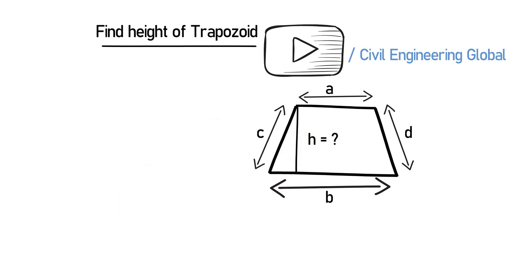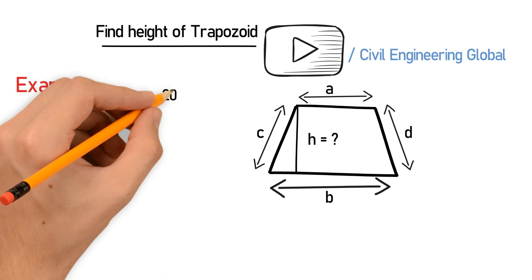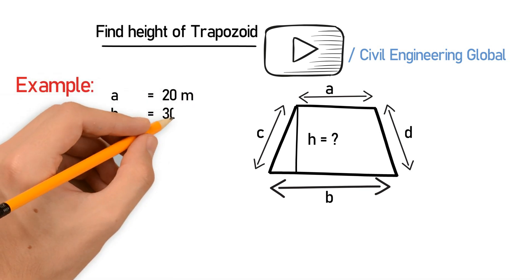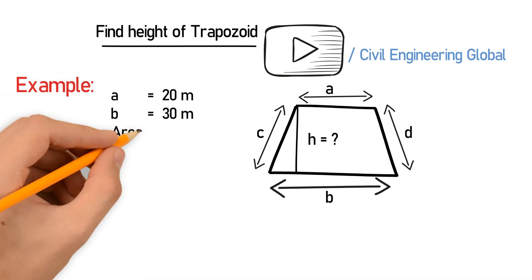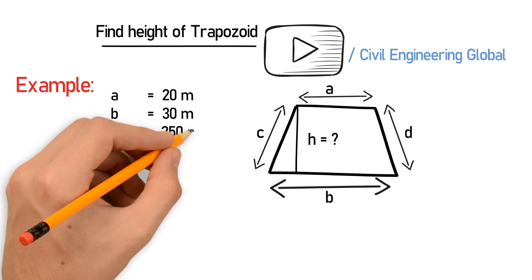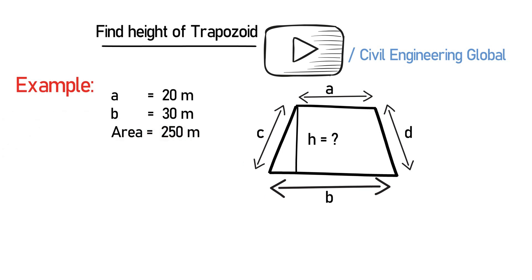We have to find the height of the trapezoid. Let's suppose an example. In this example we have the following data: base a is equal to 20 meters, base b is equal to 30 meters, area is equal to 250 meters squared. For a trapezoid, if you want to find the area, A is equal to a plus b.